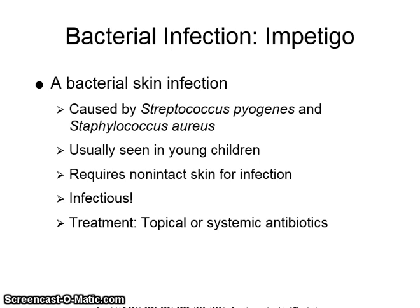Impetigo is a bacterial skin infection caused by Streptococcus pyogenes and Staphylococcus aureus. It is usually seen in young children and requires non-intact skin for infection. It is very infectious. Treatment includes topical or systemic antibiotics.